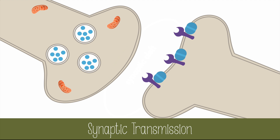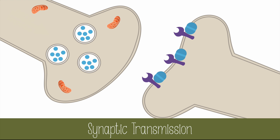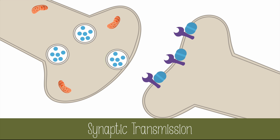Now that we know some of the basics, we can look at the steps of synaptic transmission in more detail. First, a nerve impulse in the presynaptic neuron reaches the end of the membrane. This causes calcium ions to diffuse into the cell through channels in the membrane. The influx of calcium causes vesicles with neurotransmitters in them to move and fuse to the cell membrane. The neurotransmitters are released into the synaptic cleft by exocytosis.